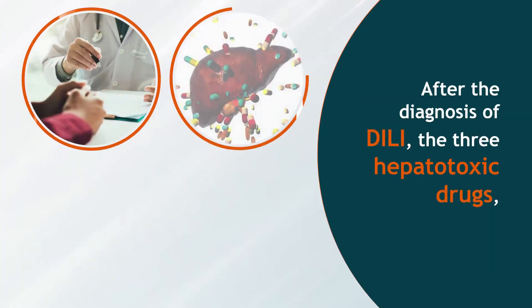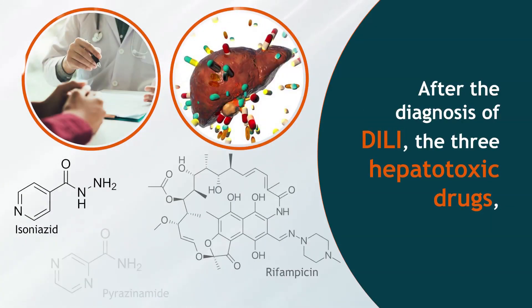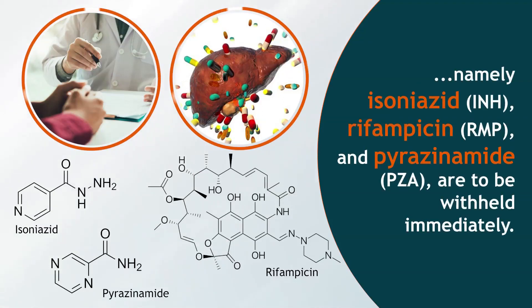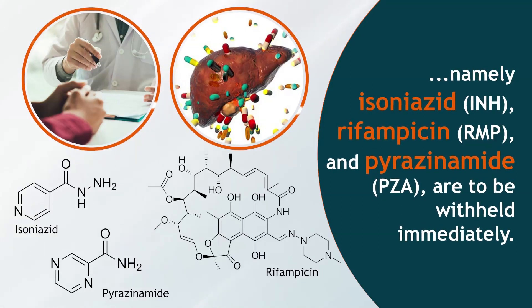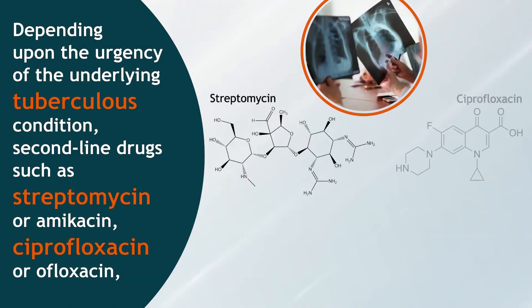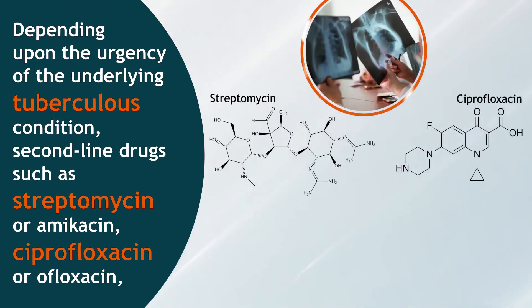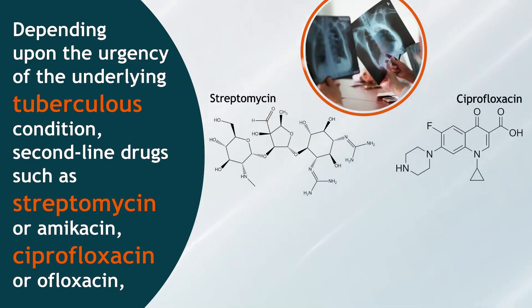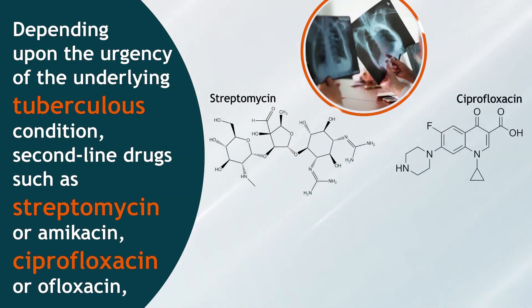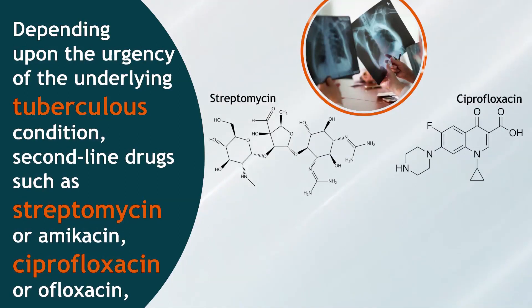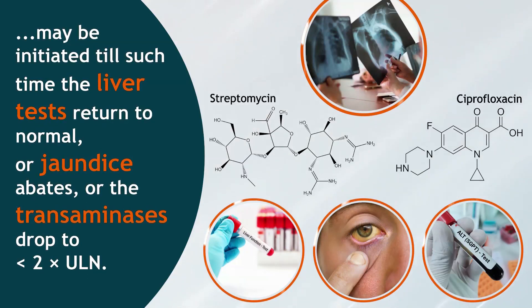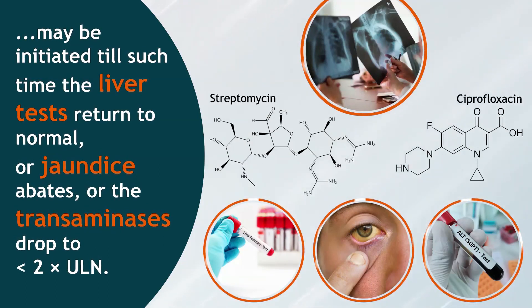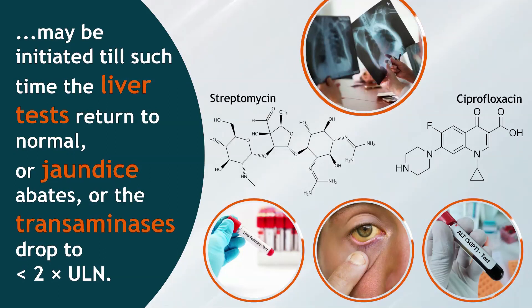After the diagnosis of DILI, the three hepatotoxic drugs — namely isoniazid (INH), rifampicin (RMP), and pyrazinamide (PZA) — are to be withheld immediately. Depending upon the urgency of the underlying tuberculosis condition, second-line drugs such as streptomycin or amikacin, ciprofloxacin, or ofloxacin may be initiated until the liver tests return to normal, jaundice abates, or transaminases drop to less than two times the upper limit of normal (ULN).